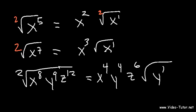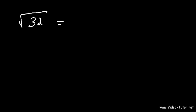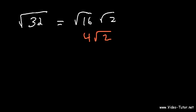That's a quicker way to simplify radicals. Now, let's say if you have a number — let's say if you want to simplify the square root of 32. What you want to do is break this down into two numbers, one of which is a perfect square. 32 can be broken down into 16 and 2. The square root of 16 is 4, so this is just 4 root 2.